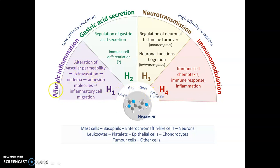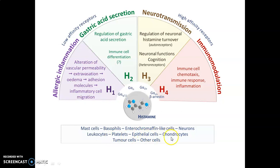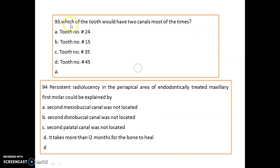Let's understand histamine in detail. There are four receptors: H1, H2, H3, and H4. H1 is related to allergic inflammation — it causes alteration of vascular permeability leading to extravasation, edema, adhesion molecules, and inflammatory cell migration. H2 is related to gastric acid secretion. H3 is related to neurotransmission, regulating neuronal histamine turnover and neuronal cognition. H4 is related to immunomodulation, immune cell chemotaxis, and inflammation. H1 and H2 are low-affinity receptors; H3 and H4 are high-affinity receptors. Cells secreting histamine include mast cells, basophils, enterochromaffin-like cells, neurons, leukocytes, platelets, epithelial cells, chondrocytes, and tumor cells.